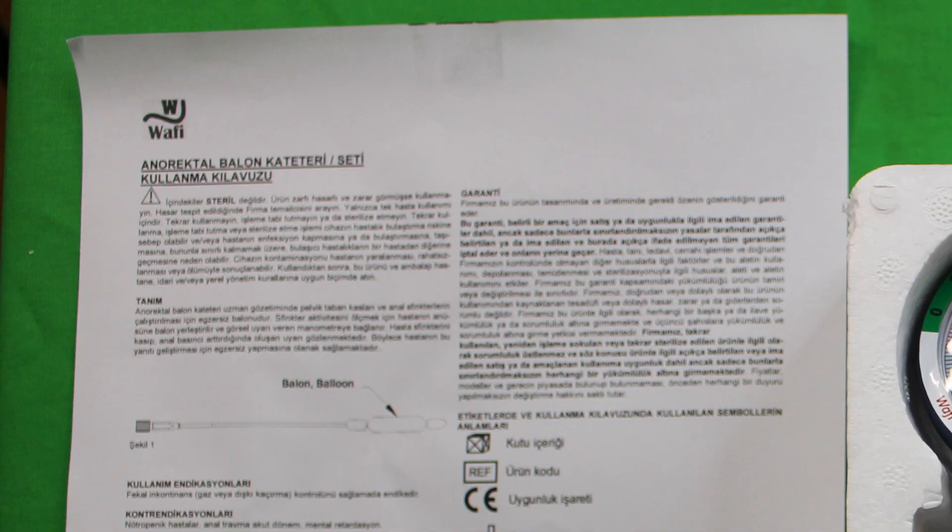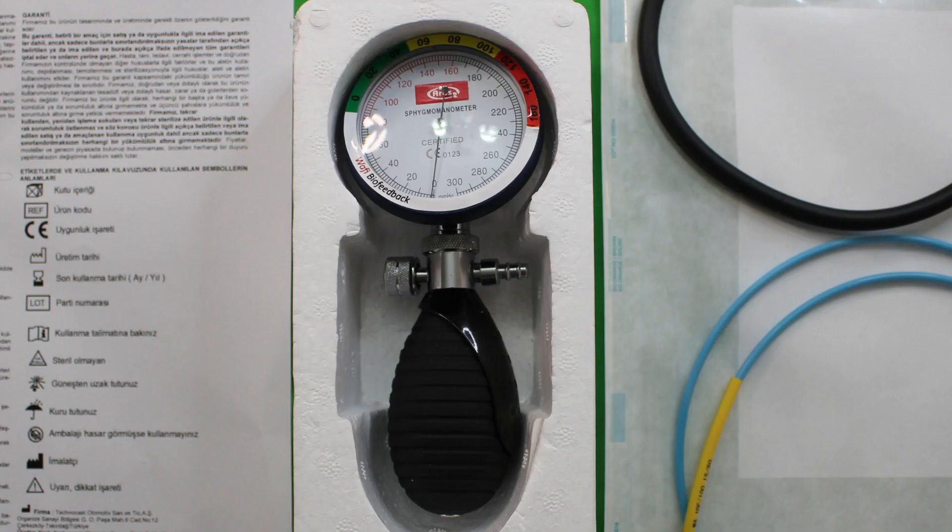When you open the device's box, you will find a user guide, manometer, pressure valve, and balloon catheter.